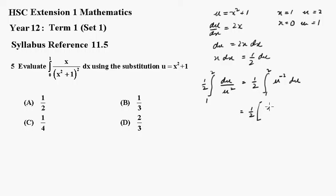That becomes u to the minus 1, adding 1 to the exponent, over minus 1 between 2 and 1. Taking the minus sign out, we get minus one half times 1 over u between 2 and 1.